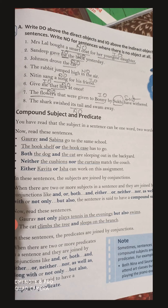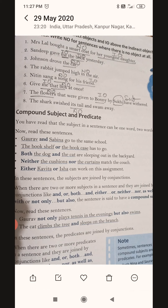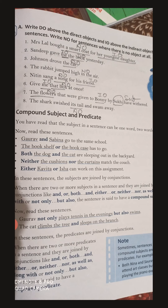Sentence number seven says: 'The flowers that were given to Bonnie by Sukhi have withered.' First of all, we have to decide what is the subject here. Most of you will think that the flowers are the subject, but not really. This sentence is in passive voice, and in passive voice, the subject is given after 'by'.